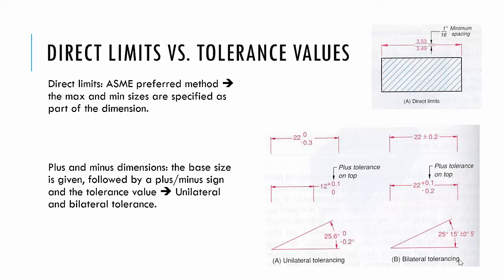The direct limit method, the first method previously, is the ASME, American Society of Manufacturing Engineers, preferred method for dimensioning. Plus and minus is the unilateral and bilateral again, and it includes the base plus the tolerances. Remember that we also could be talking about angles, not just lengths and widths.